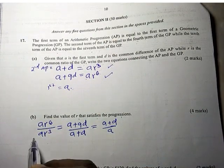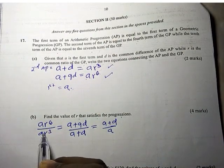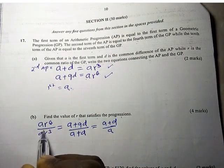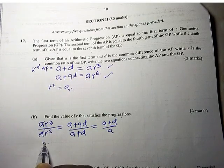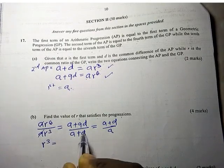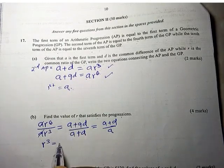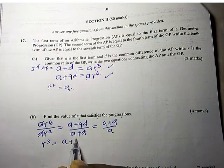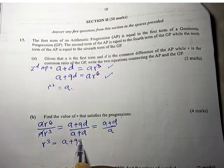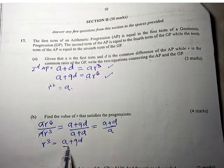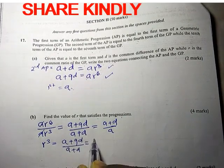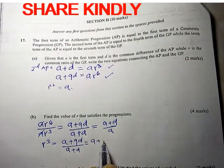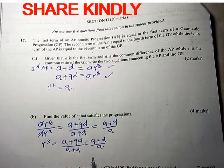So R cubed equals (A + 9D) over (A + D), and also equals (A + D) over A. We can write: R³ = (A + 9D)/(A + D) = (A + D)/A.